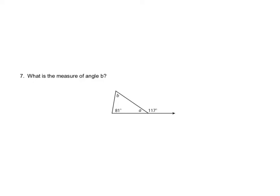What is the measure of angle B? Before we can find that, we have to find angle A. Its exterior angle is 117 degrees. An exterior angle and its adjacent interior angle are supplementary — they add up to 180. So 180 minus 117 gives us A equals 63 degrees.